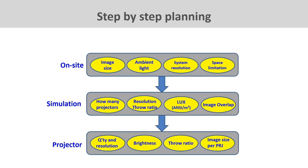For step-by-step planning during system implementation, first gather on-site information including image size, space limitation, ambient light, and content resolution. Based on image size and watching distance, determine the minimum system resolution. Based on ambient light, determine the required lux — the final brightness on screen. Then, using system resolution, lux value, and space limitations, simulate on a planning tool to produce an installation plan including required projector quantities and key specs.